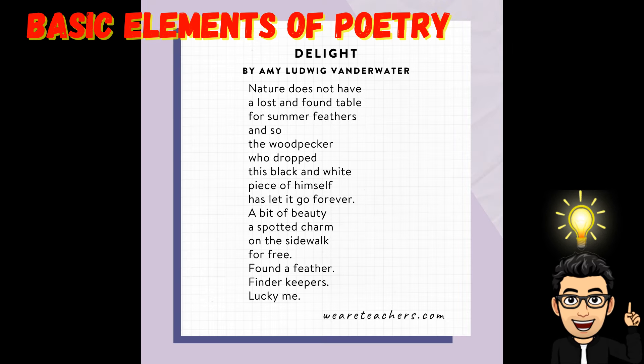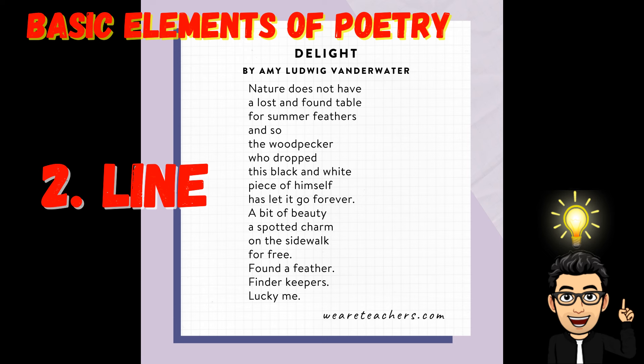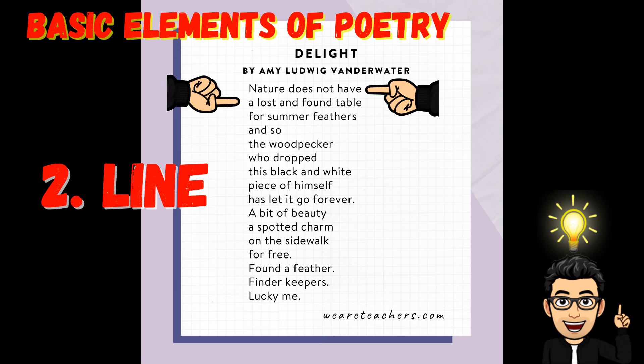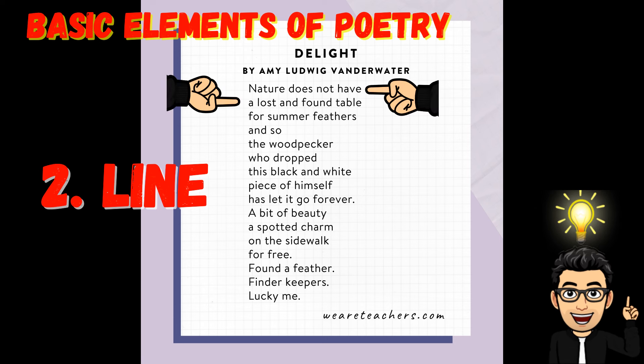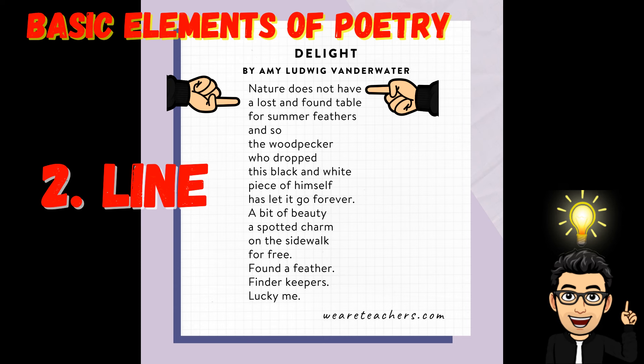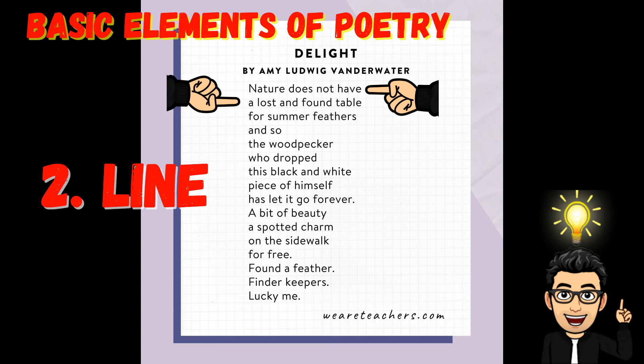The second element is line. A line is the basic unit of poetry, often characterized by its length, rhythm, and arrangement on the page.